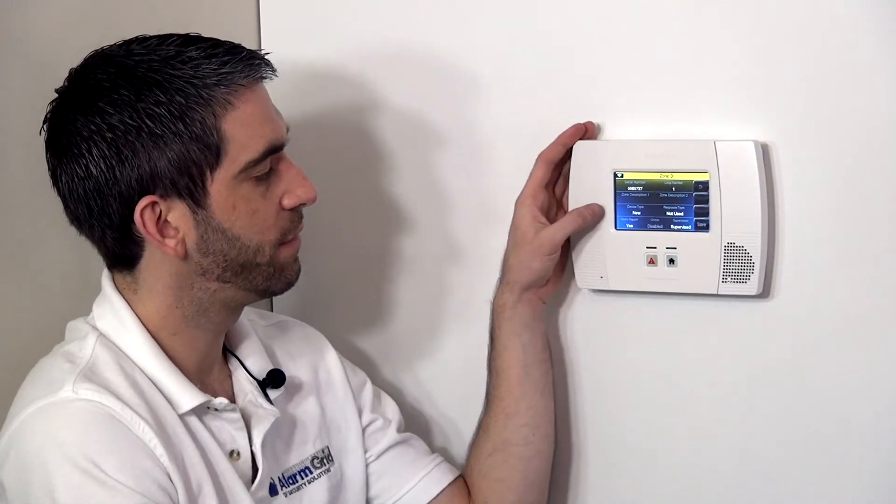That enrolls the device to the system and takes us to our zone screen. On this screen, this is where we have to select the parameters to tell the system how to respond to inputs from this device. The first thing we want to choose is are we going to put this on a door or a window.